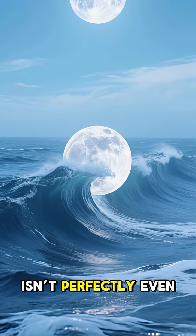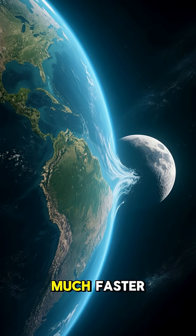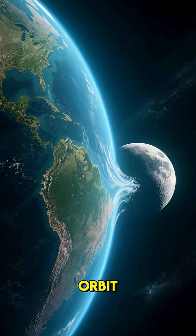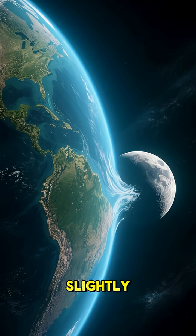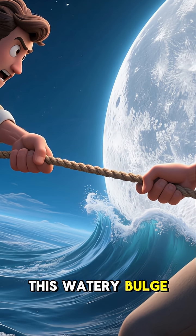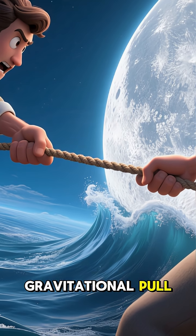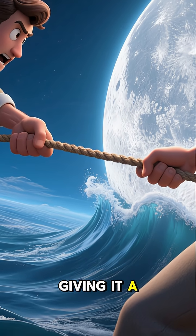But this pull isn't perfectly even. Earth's rotation is much faster than the moon's orbit, so it drags that tidal bulge slightly ahead of the moon. This watery bulge has its own gravitational pull, and it tugs the moon forward, giving it a little speed boost.